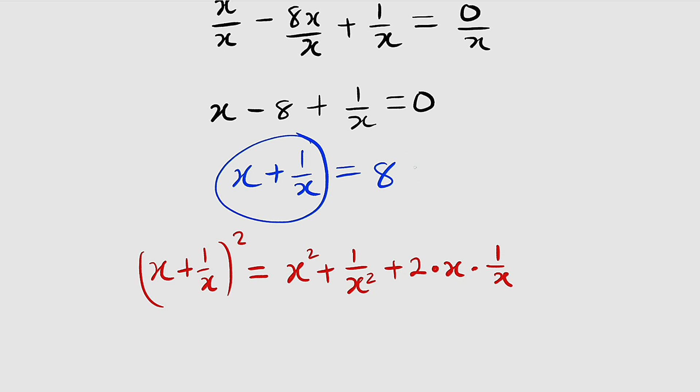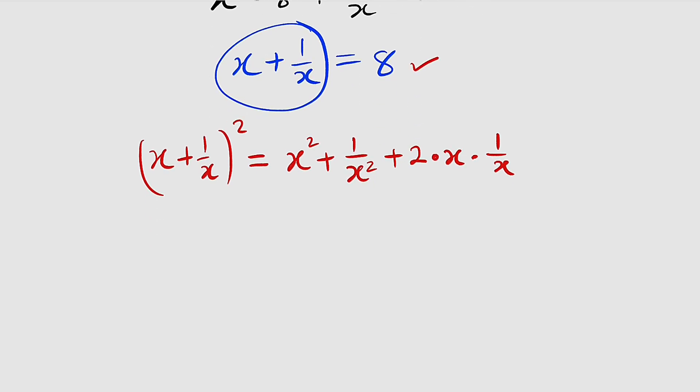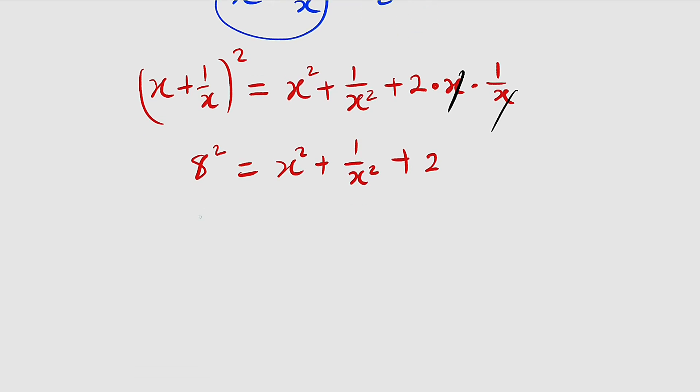But already we know that x + 1/x is equal to 8. So we can write it here. So we have 8² here. This is equal to x² + 1/x² plus, you know that this will cancel, we have only 2. To the left hand side we have 8² which is 64.